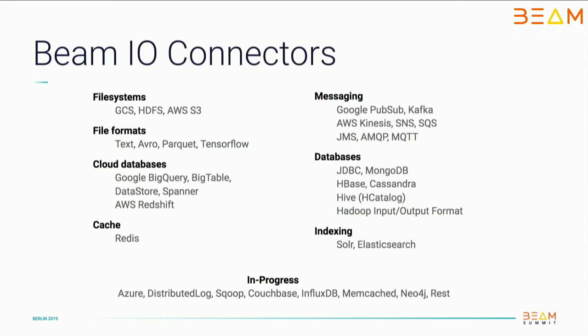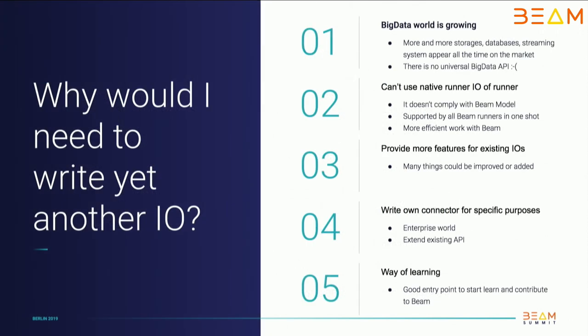Of course we can expect that Beam already provides a bunch of different I/O connectors for different use cases: different file systems, messaging systems, file formats, databases, and so on. There are still several of them in progress, so it's a good chance to work on them if you need it. Why would you want to write yet another I/O transform if you already have many implemented?